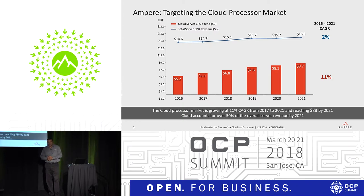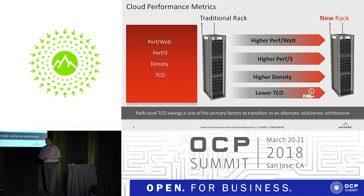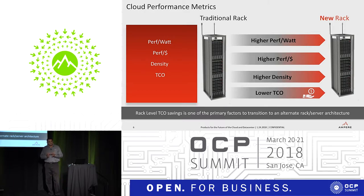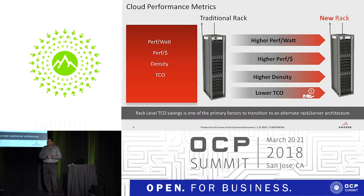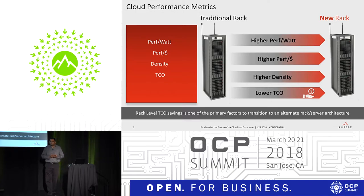The overall cloud market segment is about $8.7 billion, which is over 50% of the total server market — and that's the segment we'll be going after with the EMAC processor line. The key cloud performance metrics are performance per watt, performance per dollar, and density within the rack, which leads to TCO or total cost of ownership. Rack-level TCO savings is a primary factor in transitioning to an alternate architecture.